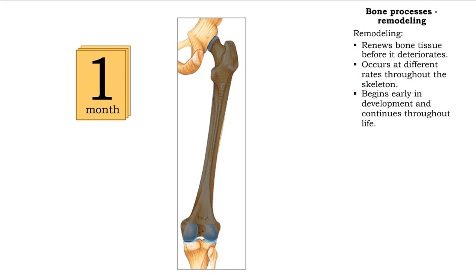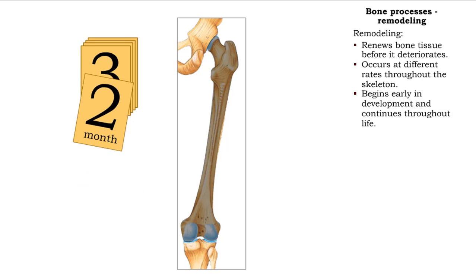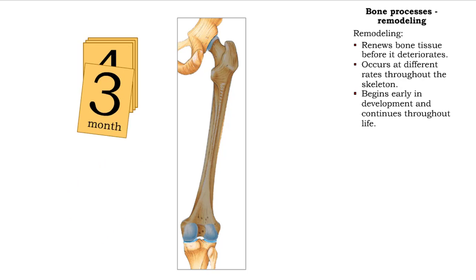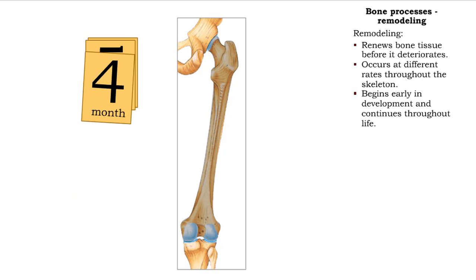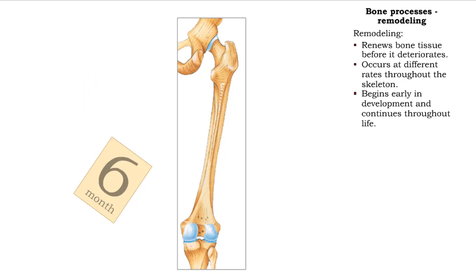The continuous and lifelong process of bone remodeling occurs at different rates, depending on the skeletal region. The distal head of the femur, shown here, is completely replaced approximately every 6 months.